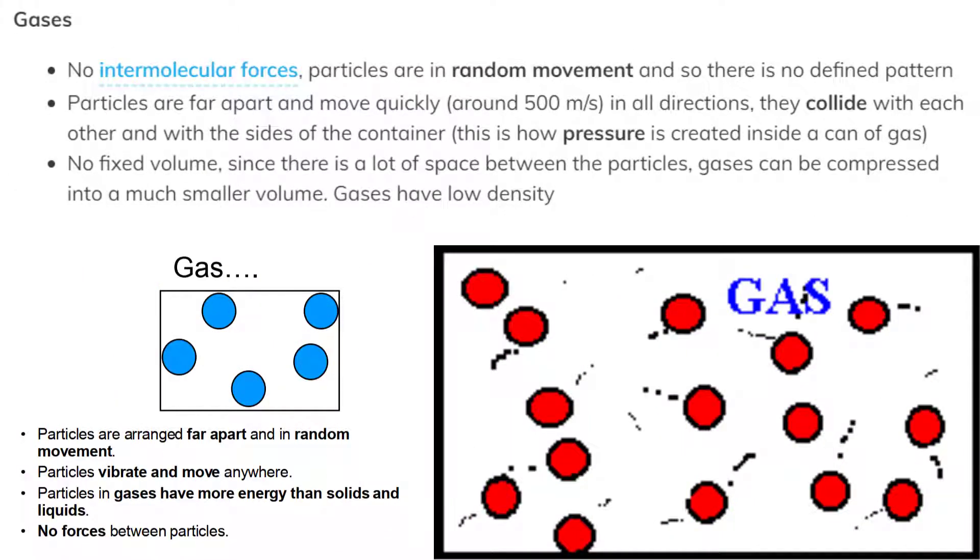In gases, no intermolecular forces. Particles are in random movement and so there is no defined pattern. Particles are far apart and move quickly, around 500 meters per second, in all directions. They collide with each other and with the sides of the container. This is how pressure is created inside a can of gas.